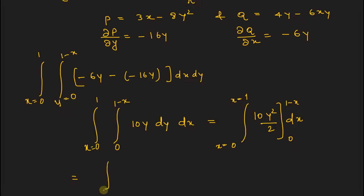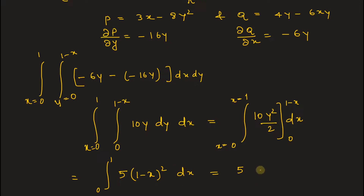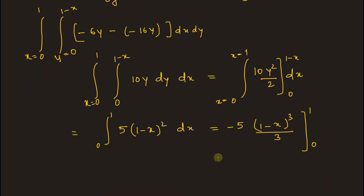This equals the integral from x equals 0 to 1 of 5y squared. Substituting the upper and lower limits gives 5 times 1 minus x squared dx. The integral of this is 5 times 1 minus x cubed divided by 3, times negative 1. Evaluating the limits from 0 to 1 gives us 5 by 3. So the answer is 5/3.